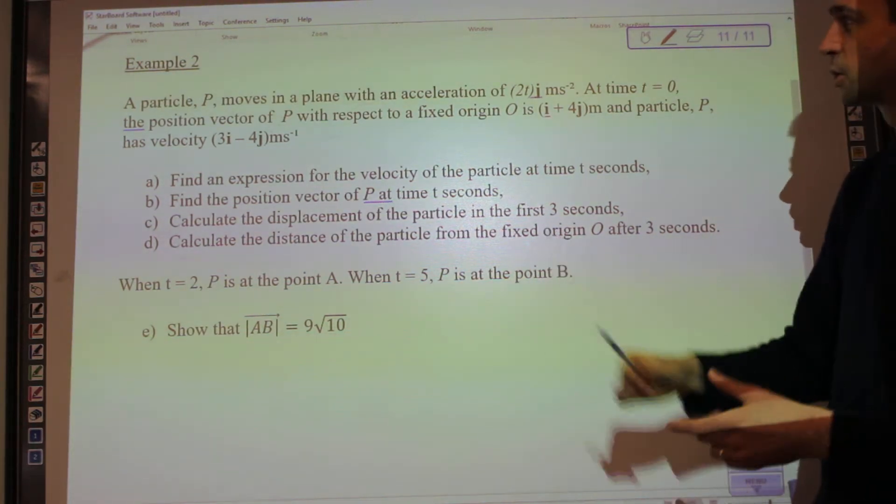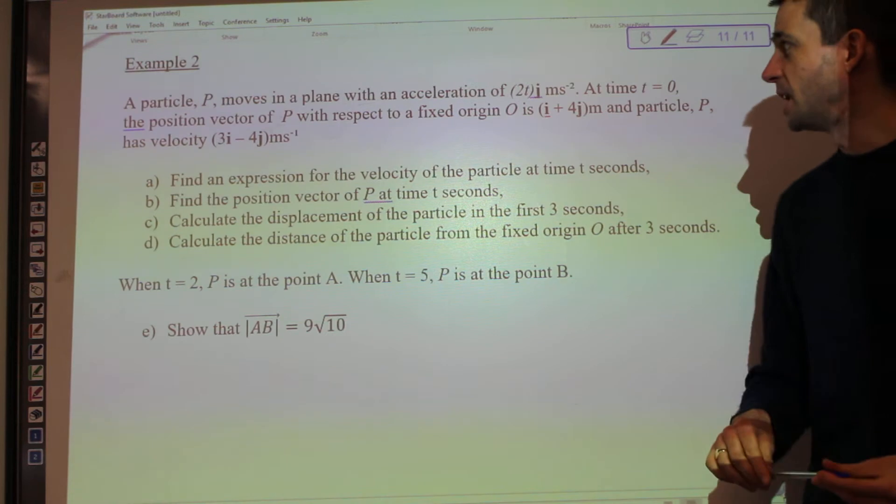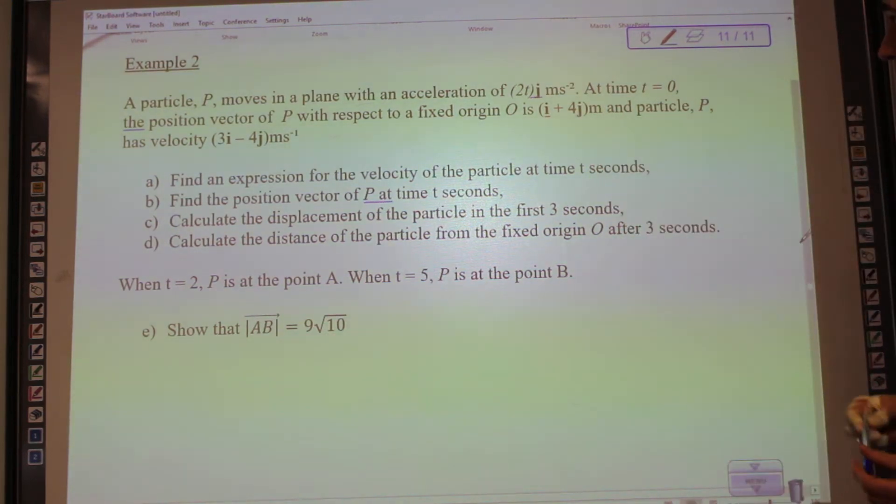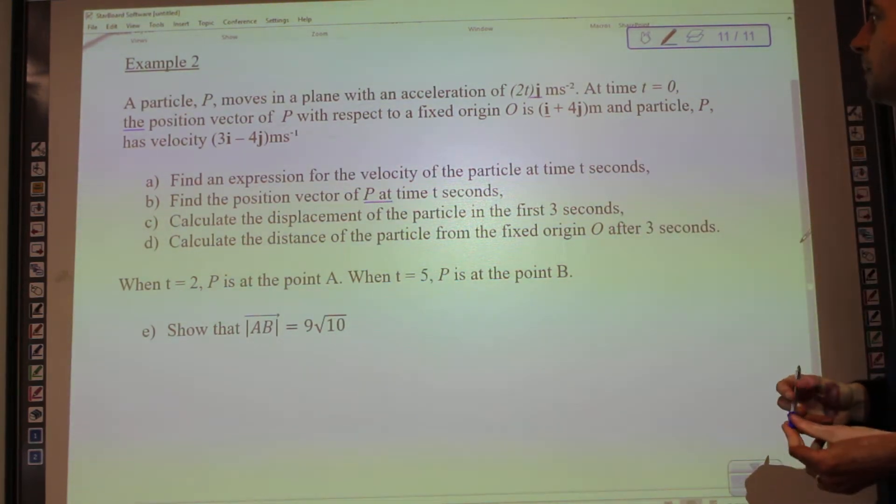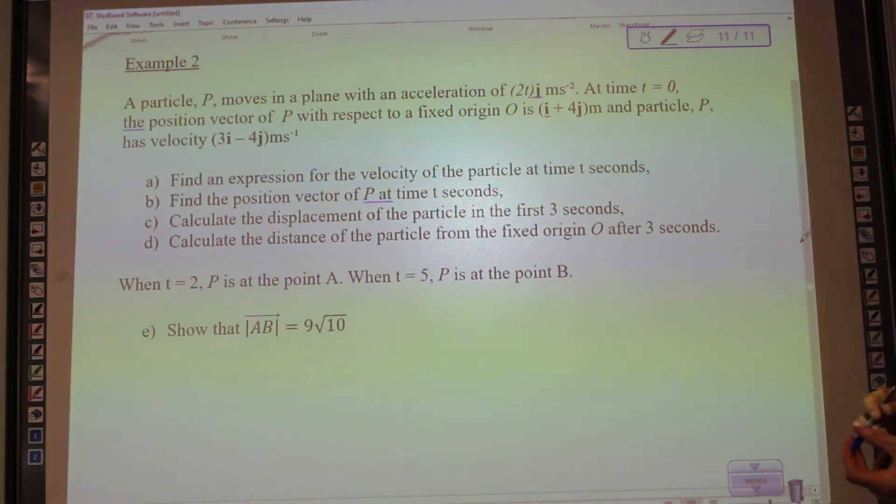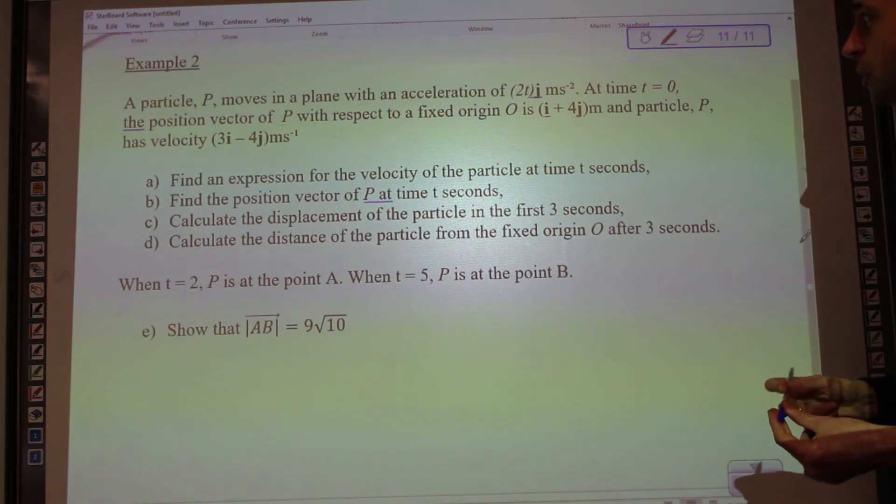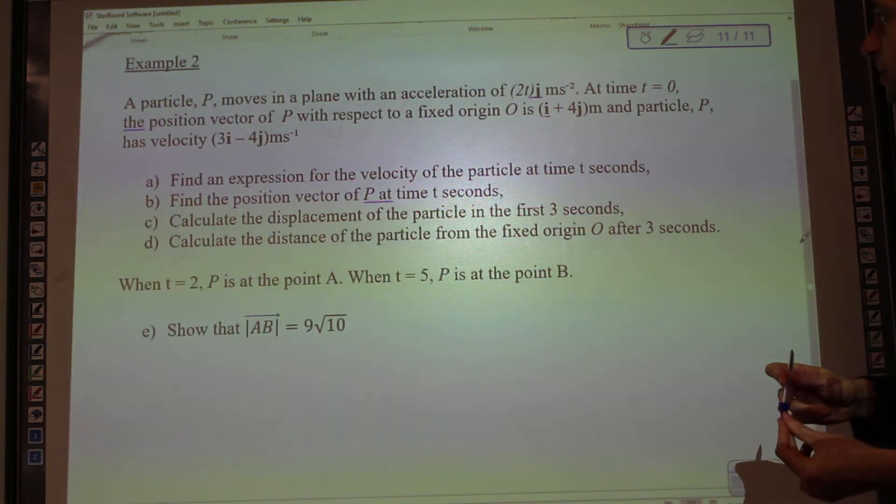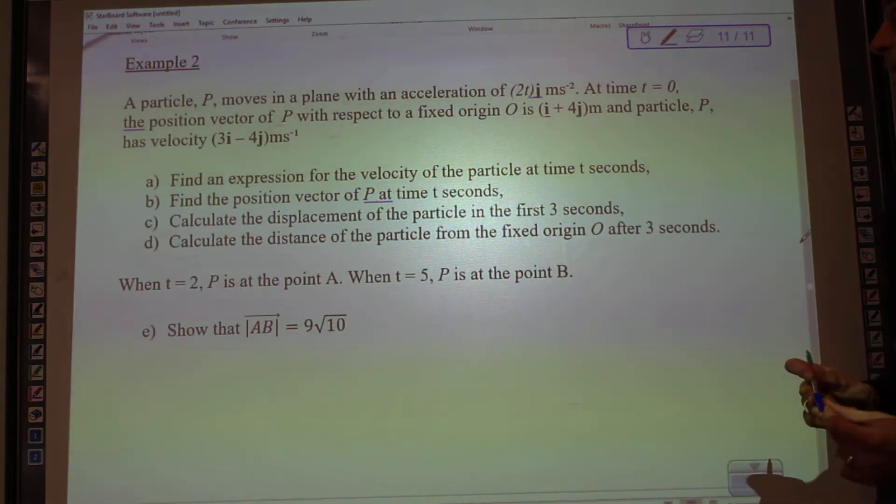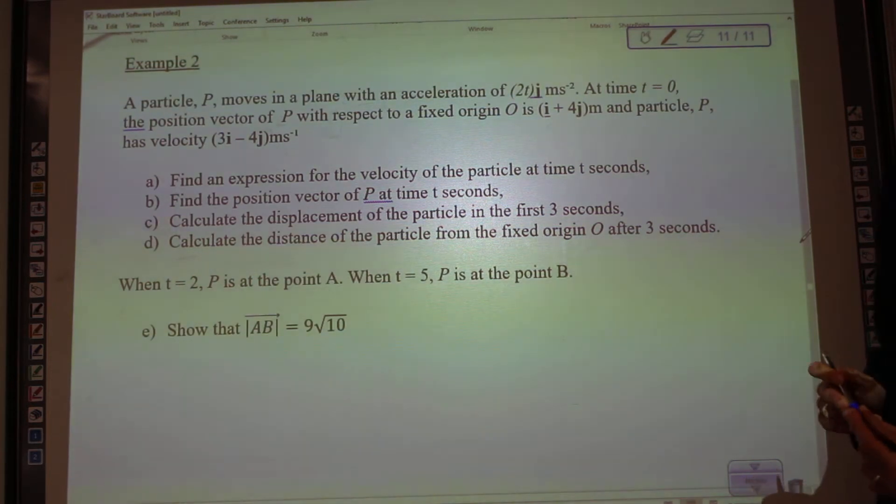A particle p moves in a plane with an acceleration of 2tj meters per second squared. At time t equals zero, the position vector of p with respect to a fixed origin o is i plus 4j, and the particle p has velocity 3i minus 4j.